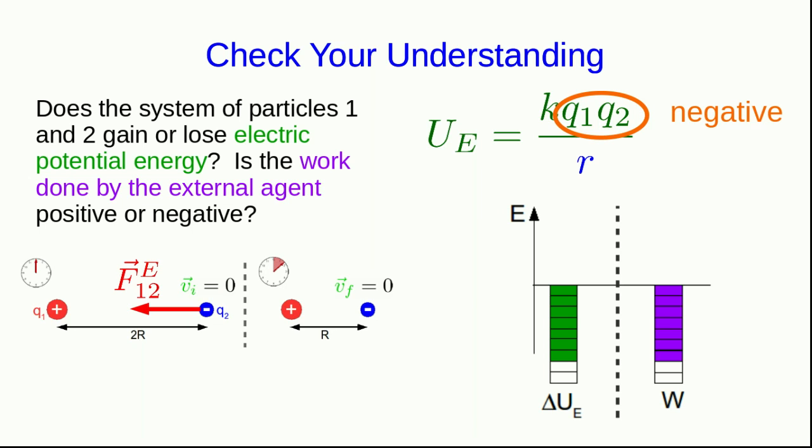Because q1 is pulling on q2. If we just release q2, it'll accelerate towards q1. But we've made it arrive at its new location with zero velocity, and so we must have been holding it back the whole way there. In other words, we were pushing away from q1 the whole time, and so we can now see why that force would do negative work.